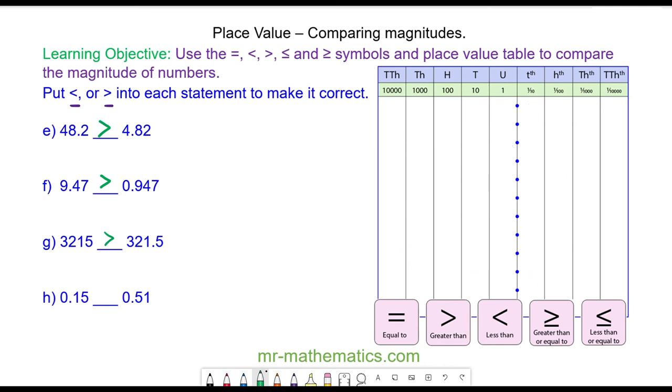And finally for question H we have 0.15 compared to 0.51. The units have the same value. However 0.51 has more tenths than 0.15. So this is less than.